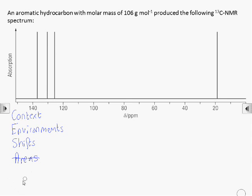The areas of carbon-13 peaks don't tell us anything about the numbers of carbons in those environments, and we don't use splitting patterns in carbon-13. This means we're more reliant on contextual information to help us solve the molecule. In this case, we're told it's an aromatic hydrocarbon and we're given the molar mass.